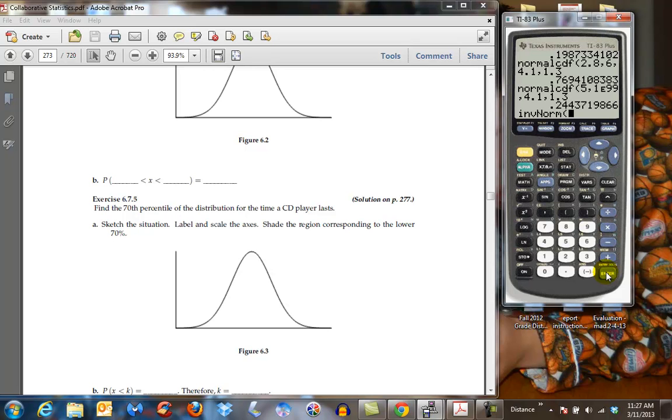So inverse normal will only find the area below a curve, less than. So we put in our value of 0.7, then we put in our mean and standard deviation of 4.1, and 1.3. And this will return 4.8 years. So 70% of the time the CD player will fail within almost 4.8 years. And that's what the inverse normal function is.